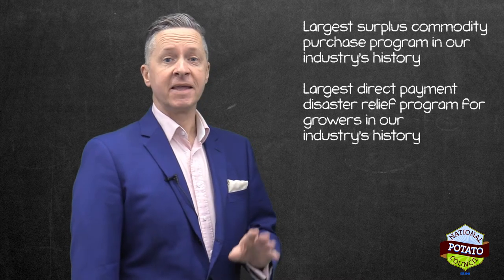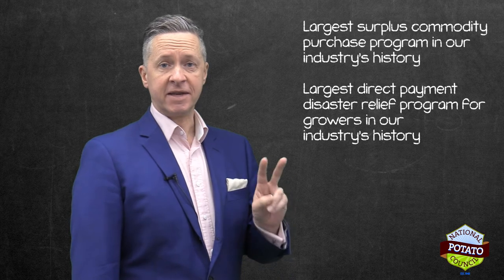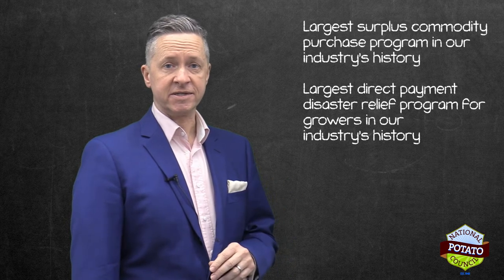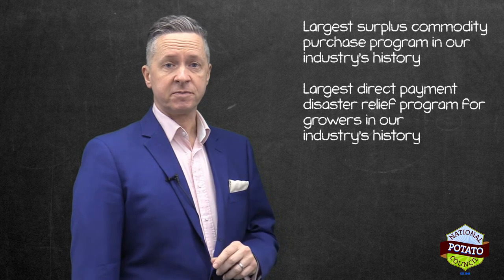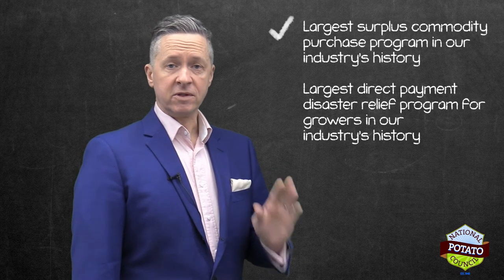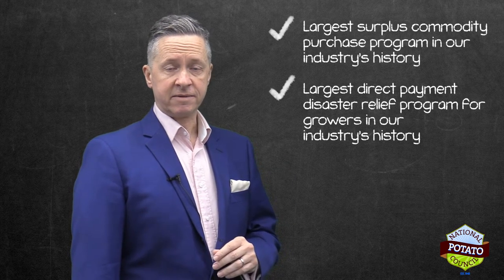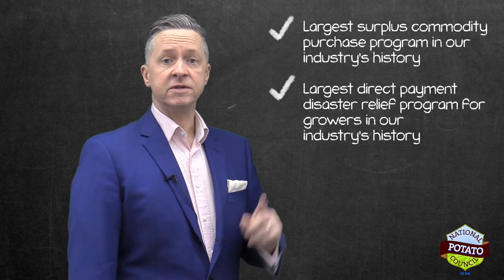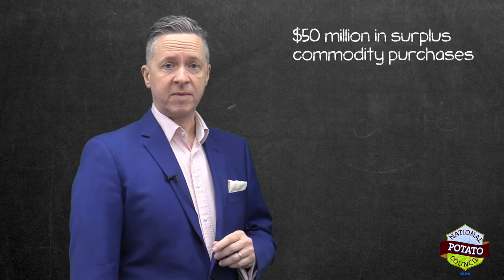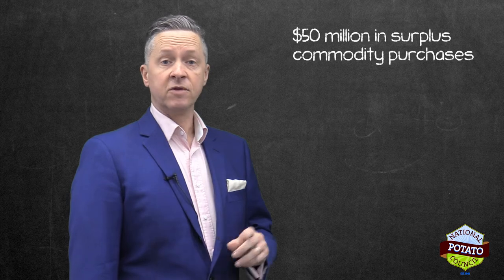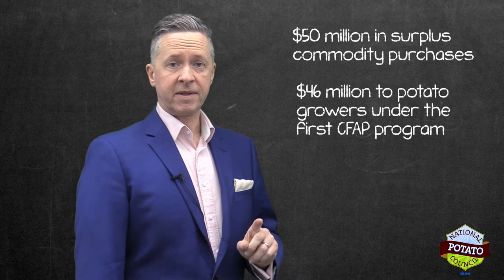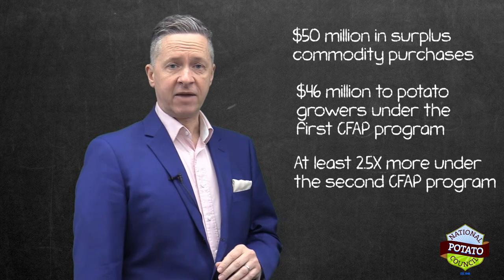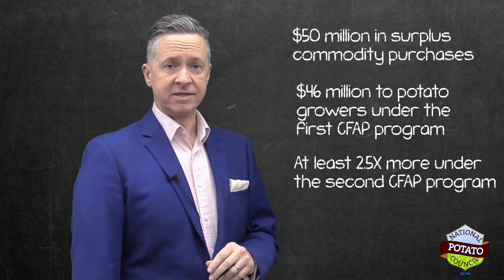Let me say that again. In the two priority areas that NPC and the state organizations identified back in early April, the federal government has responded to both with the largest relief programs in history. This includes $50 million in surplus commodity purchases of potatoes, $46 million to potato growers under the first CFAP, and at least two and a half times more under the second CFAP program.